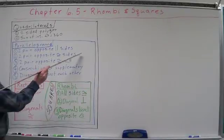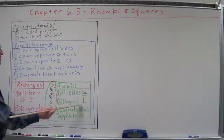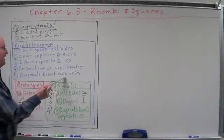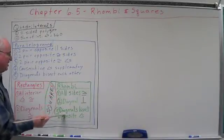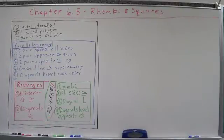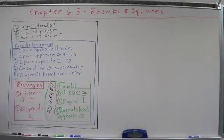In rhombi, not only do the diagonals bisect each other, but they also bisect the opposite angles. So, the diagonals bisect each other, and they bisect the angles in which they go through.